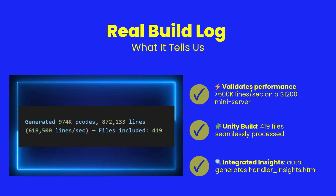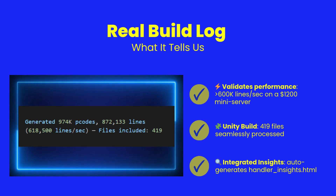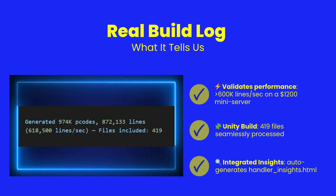This real-world build demonstrates ShearPower's performance and tooling. Compiling nearly a million lines at over 600,000 lines per second on a modest server proves our performance claims. It also highlights the Unity build concept — 419 files combined into one coherent application. With Code Insights generated automatically, developers get immediate feedback to catch issues early and improve maintainability.